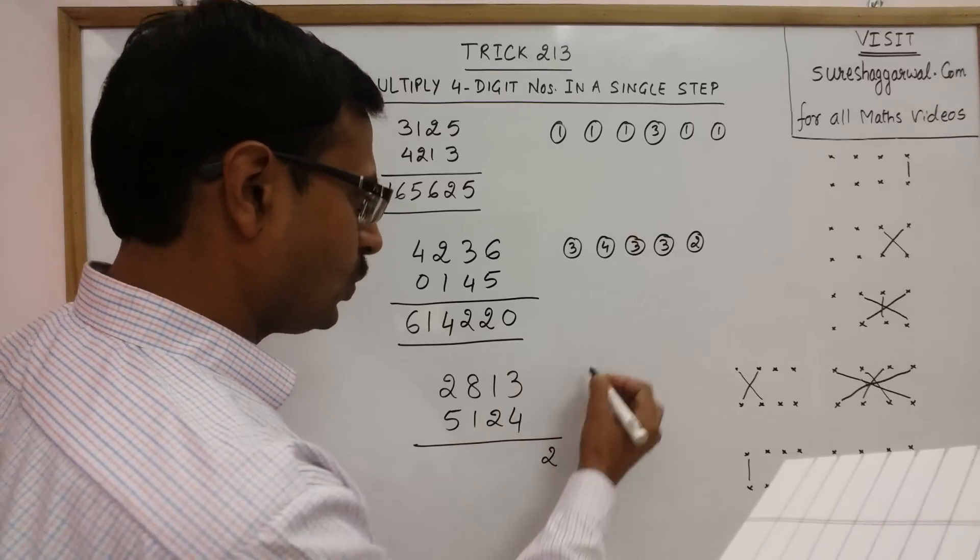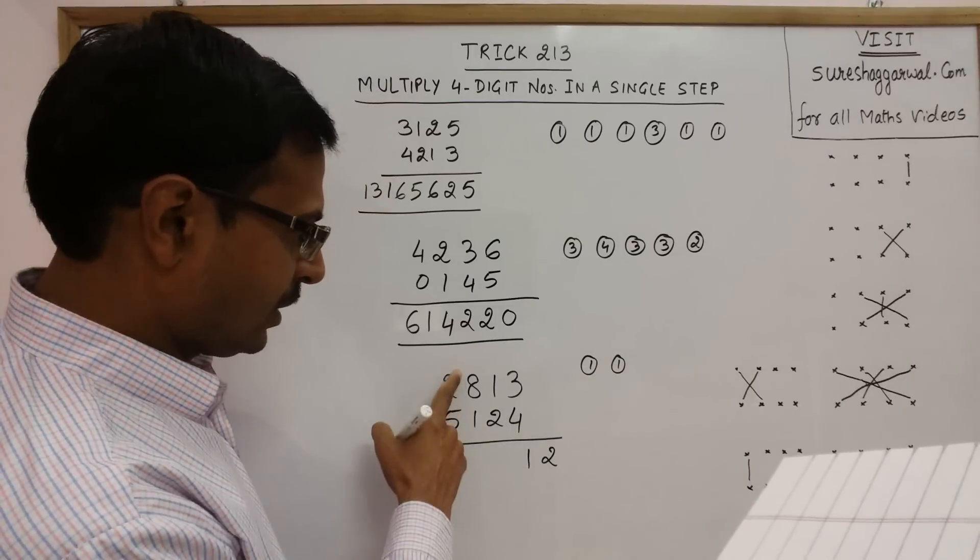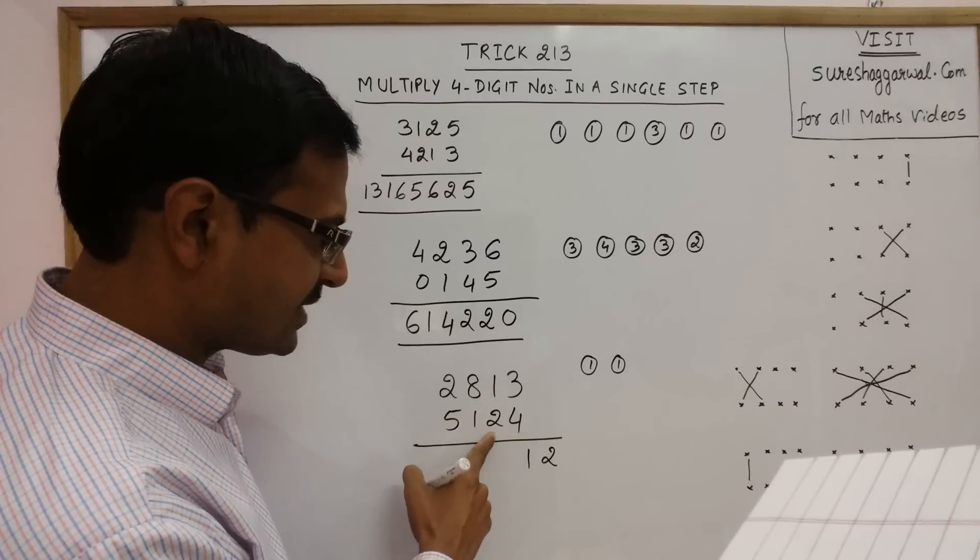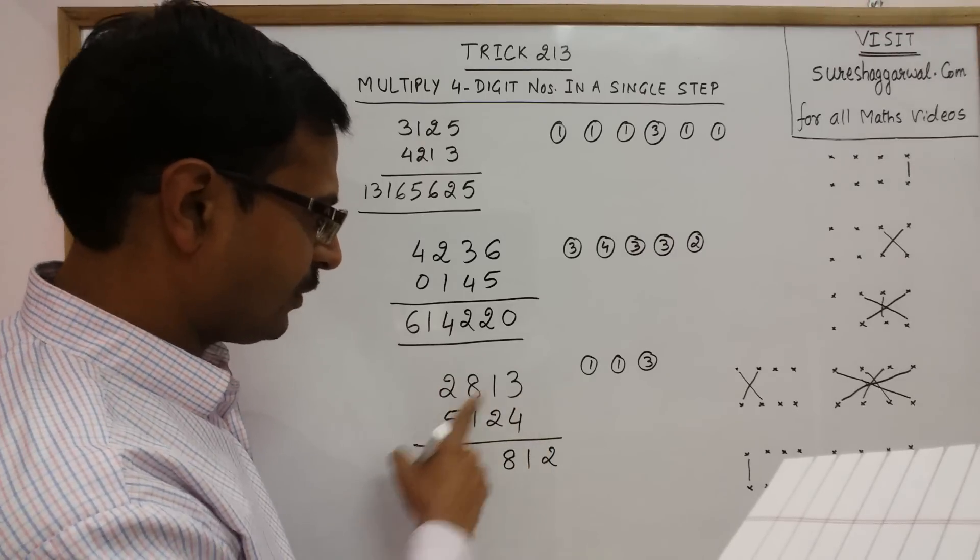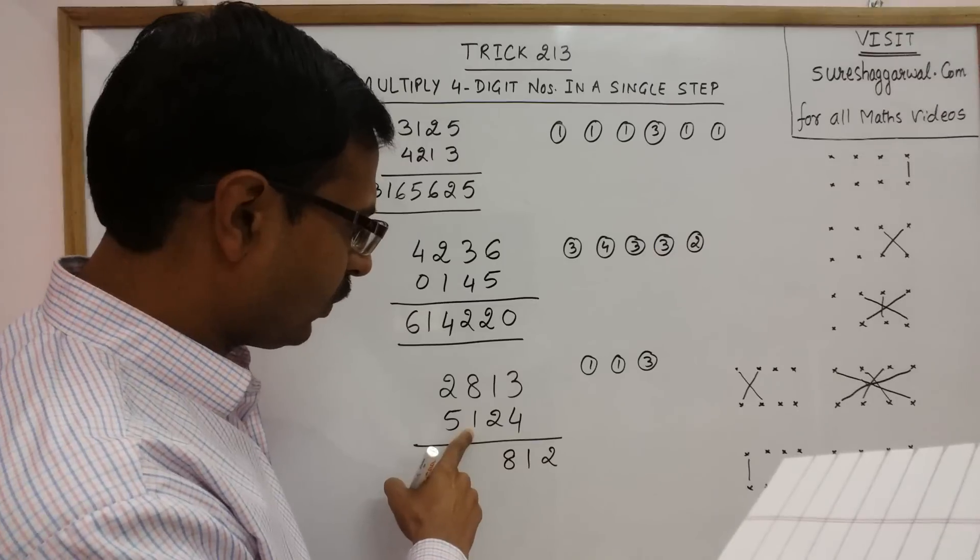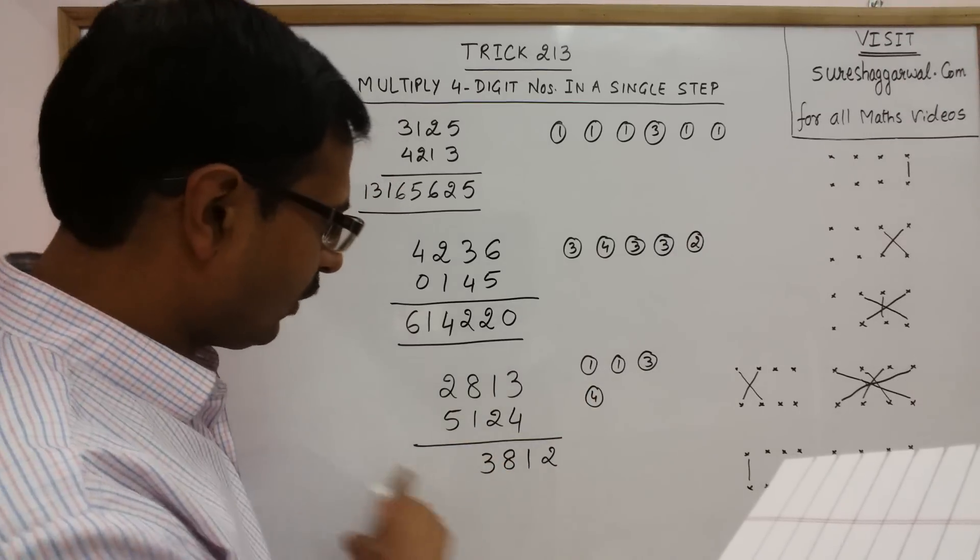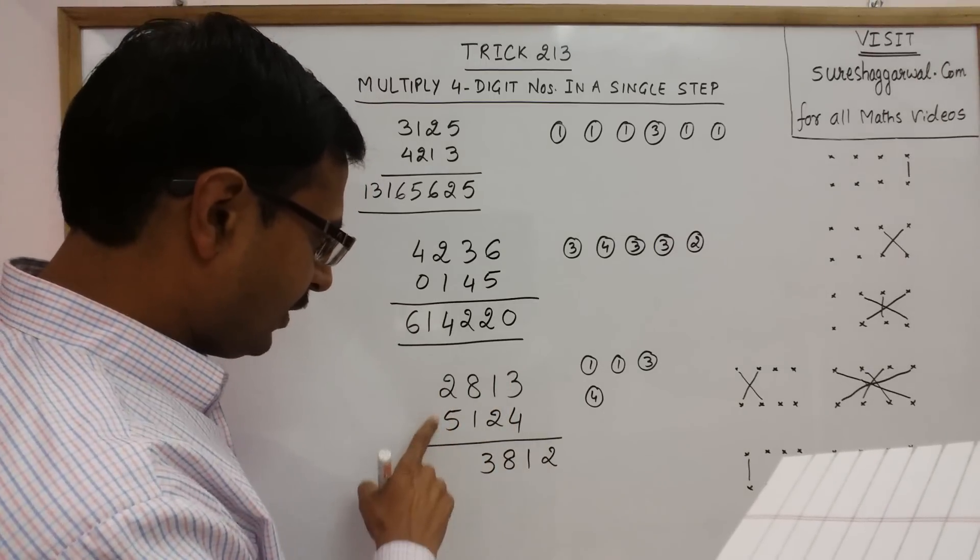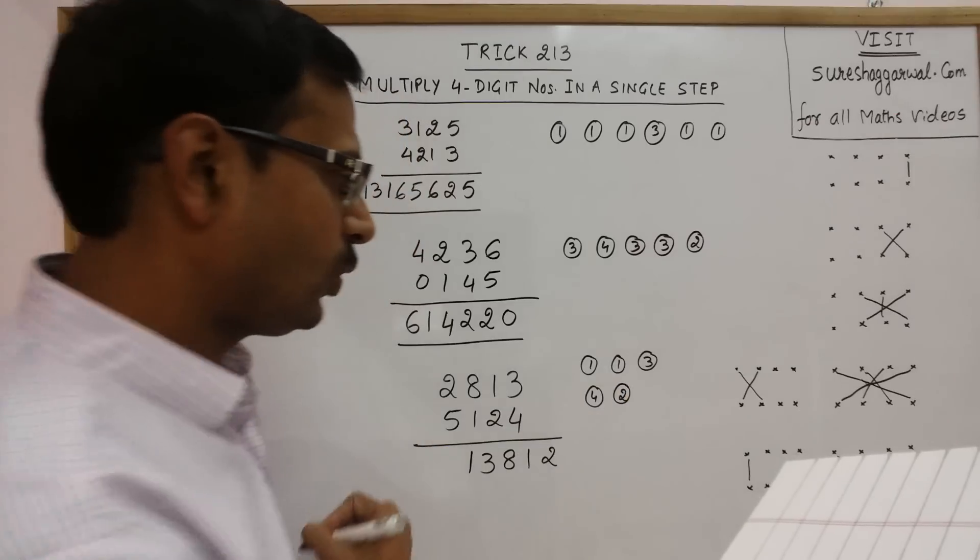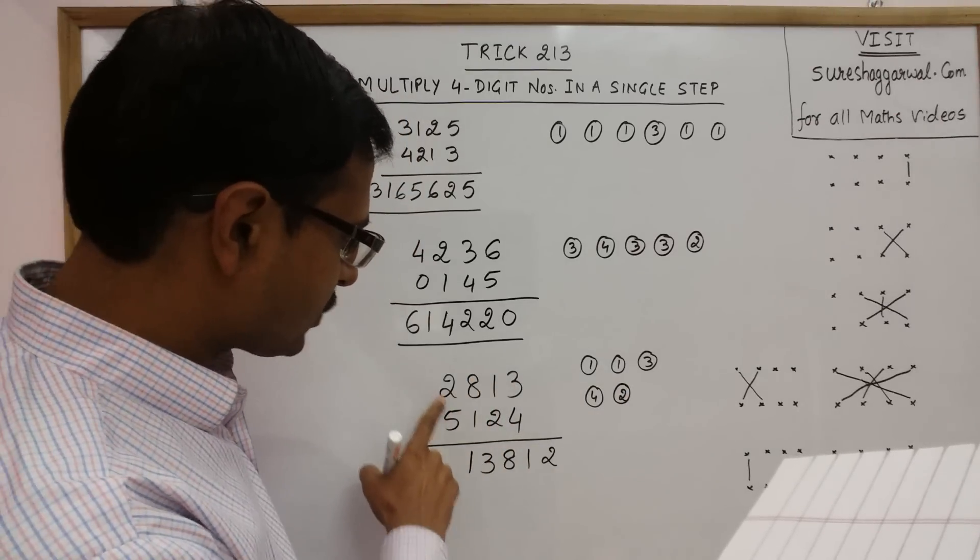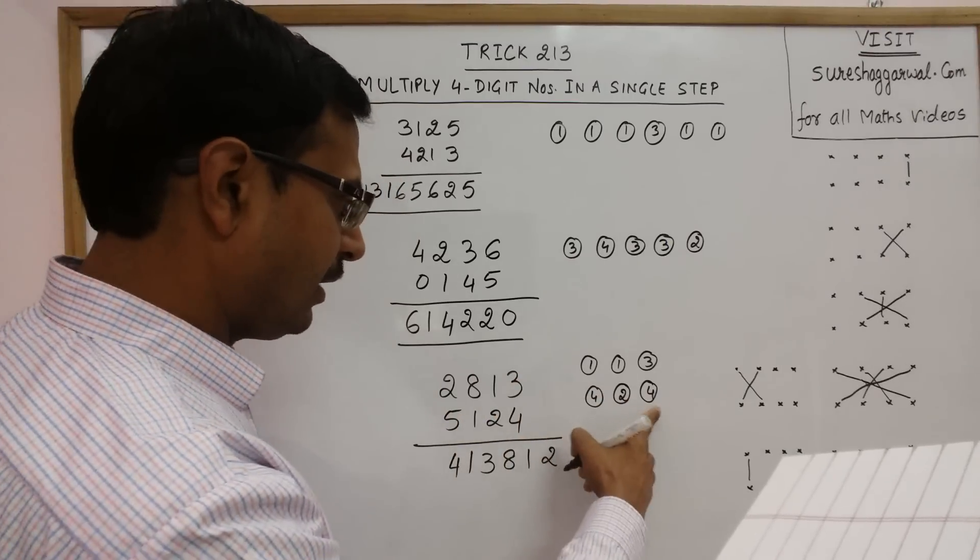Now see, 4 times 3 is 12, 2, so we have 1 carry. 6 plus 4, 10 plus 1, 11. 1, 1 carry. 32 plus 3, 35 plus 2, 37 and 1 carry is 38. 8, 3 carry. 8 plus 15, so 15 plus 8 is 23, 23 plus 1, 24 and 16 is 40, 43, 3, 4 carry. Now see, all 4 pairs are involved now. Now leave 1 pair. 5 plus 4, 9, 9 plus 8 is 17 plus 4, 21. 1, 2 carry. Leave 1 more pair. 8 times 5 is 40 plus 2, 42 plus 2, 44. 4, 4. Leave 1 more pair. 5 times 2 is 10 and 4, 14.